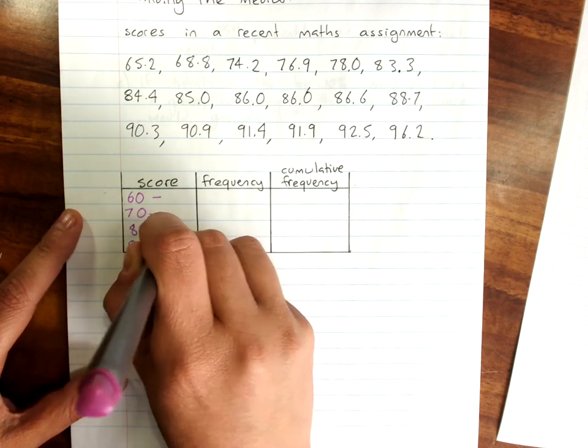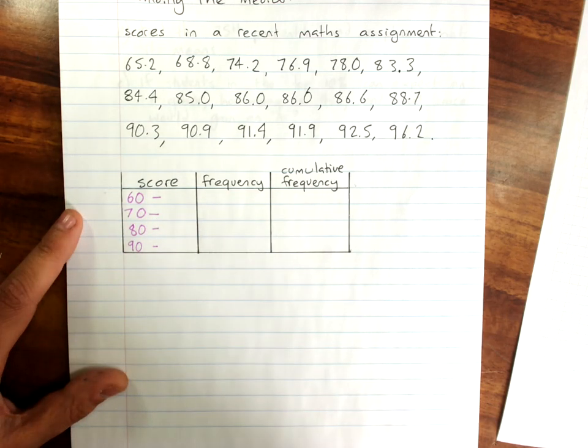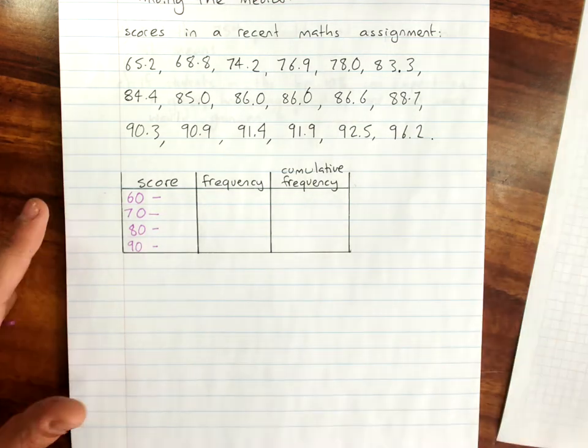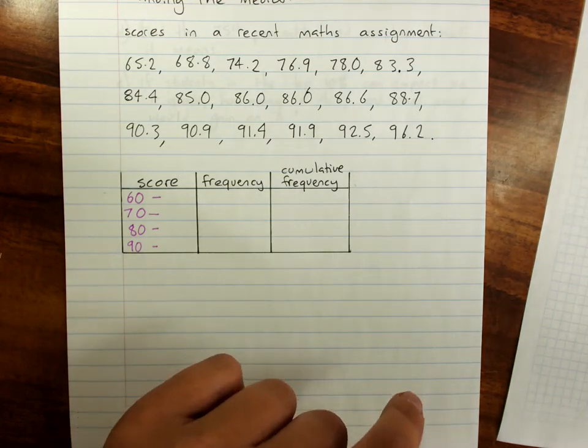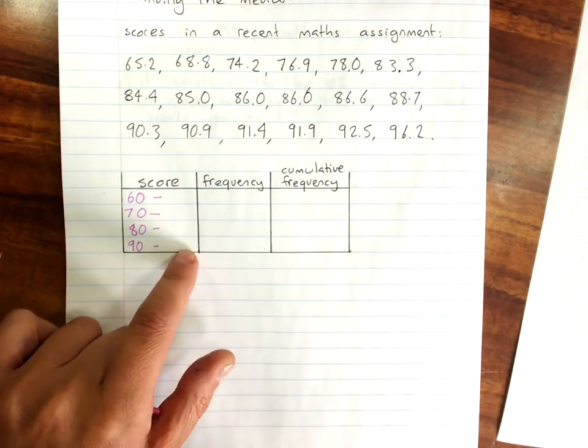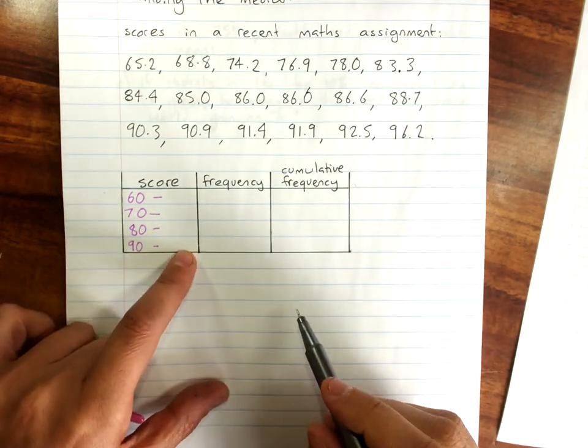90 up to 100. I'm just not sure if we would normally put that. We can put 100 there if we want. It might make it easier for you.